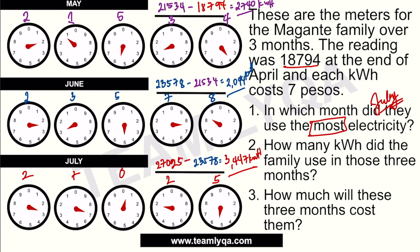The next question asks: how many kilowatt hours did the family use in those three months? We simply add them all together: 2,740 plus 2,044 plus 3,447 equals 8,231 kilowatt hours.